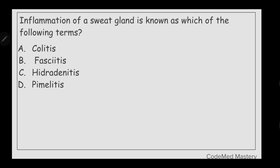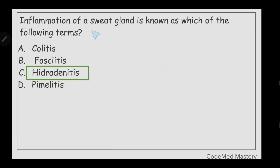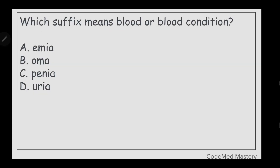Next question: inflammation of a sweat gland is known as which of the following terms? Option A: colitis, option B: fasciitis, option C: hidradenitis, option D: pumilitis. The right answer is option C, hidradenitis. In this term, hydros means sweat, adeno means glands, and itis means inflammation, so hidradenitis is inflammation of the sweat gland.